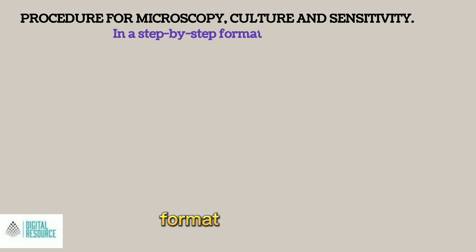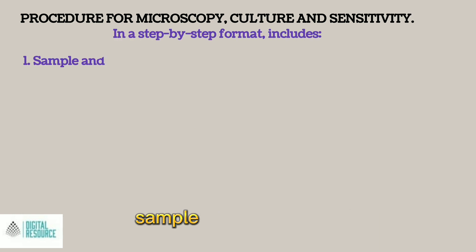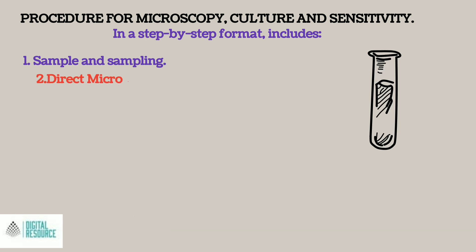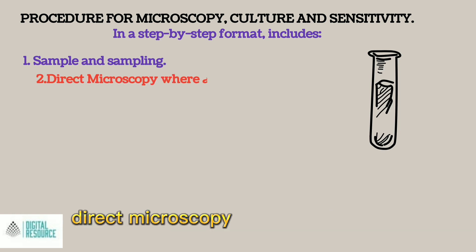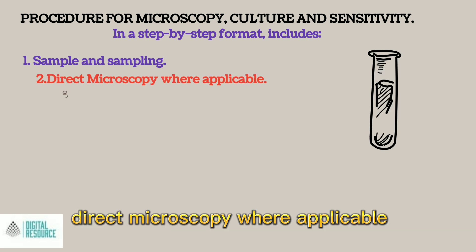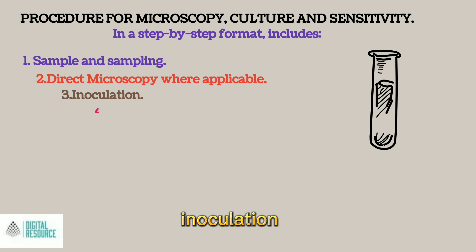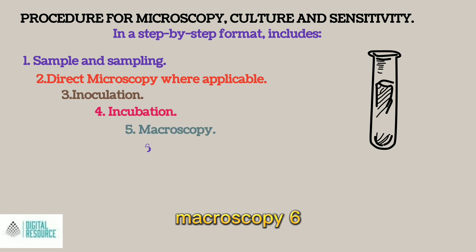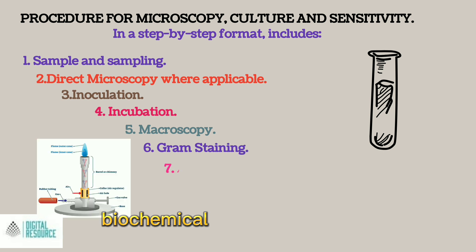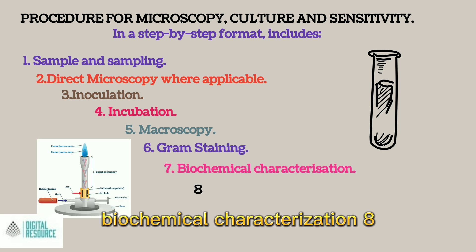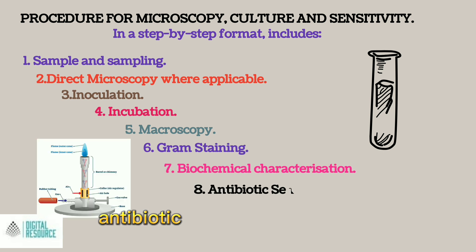Procedure for Microscopy, Culture and Sensitivity in a step-by-step format includes: 1. Sample and Sampling. 2. Direct Microscopy where applicable. 3. Inoculation. 4. Incubation. 5. Macroscopy. 6. Gram Staining. 7. Biochemical Characterization. 8. Antibiotic Sensitivity Test.